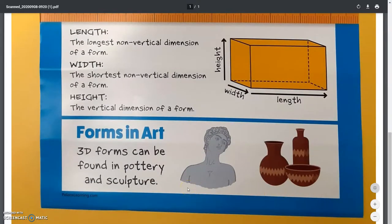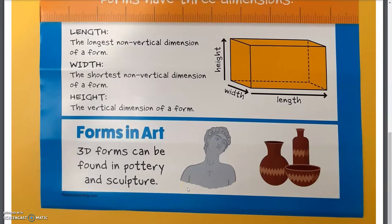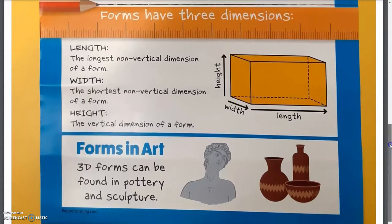Forms in art. 3D forms can be found in pottery and sculpture. It's very easy to find form in art if you think about a sculpture or if you think about a piece of pottery. A vase, a bowl, something to hold flowers in. It's a very easy way to remember what form is.